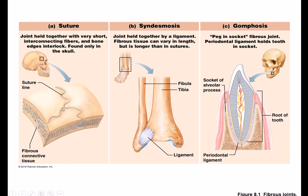Sutures are the interlocking joints of the skull, held together by very tiny ligaments — just a little fibrous connective tissue between the suture lines. Syndesmosis joints, like the distal tibiofibular joint, have a slightly longer ligament but still not really very long, so not much movement is permitted. One cool thing about many joints is that the name tells you the two bones it connects — the tibia and the fibula.